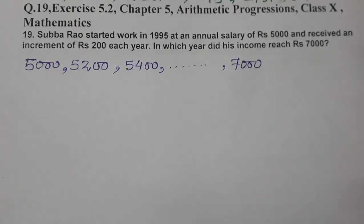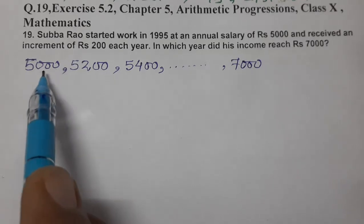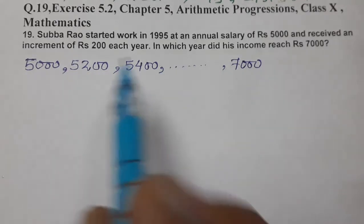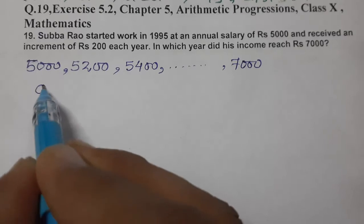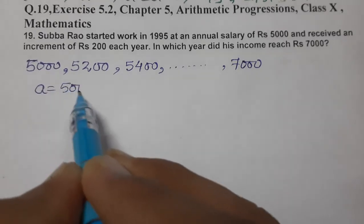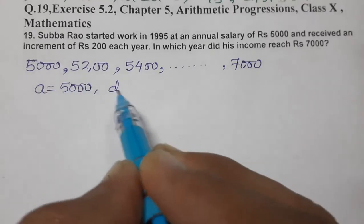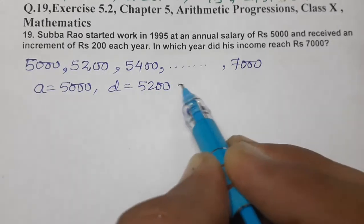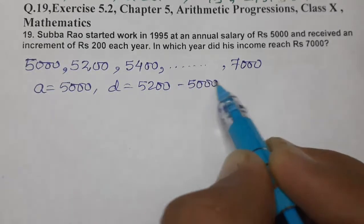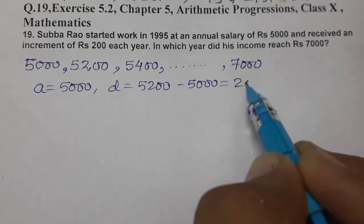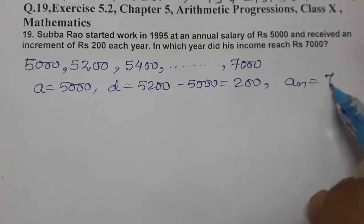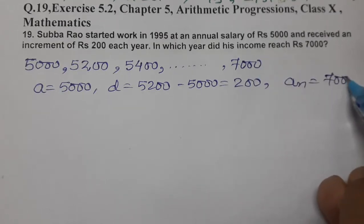So, this we need to find out. This is an AP. First term is 5,000, common difference is 200. So, A is 5,000. D is given to us: 5,200 minus 5,000, that means 200. And the last term is given to us — An is equal to 7,000.